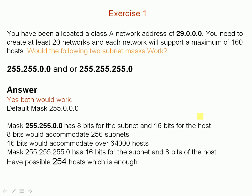Okay, let's start with our first exercise. We've got a class A network address — the address is 29.0.0.0. We need to create at least 20 networks, and each subnetwork will support a maximum of 160 hosts. Would the following two subnet masks work?